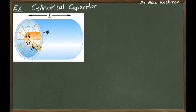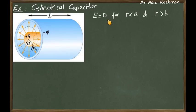For this, we may use the direct result of a linear charge density — the electric field around the inner conductor. We know that the electric field inside a conductor is zero, so the electric field is zero for radii less than A, which is the radius of the inner conductor. The electric field is again zero for radii greater than B, by Gauss's law.